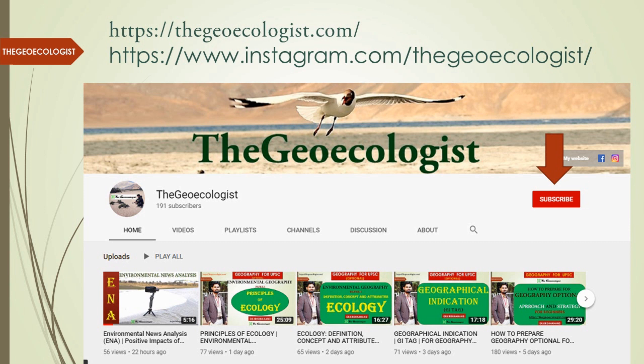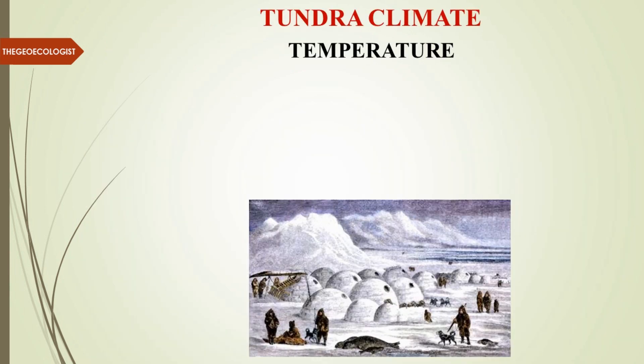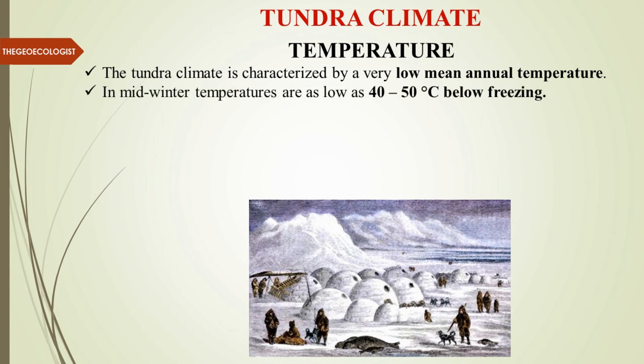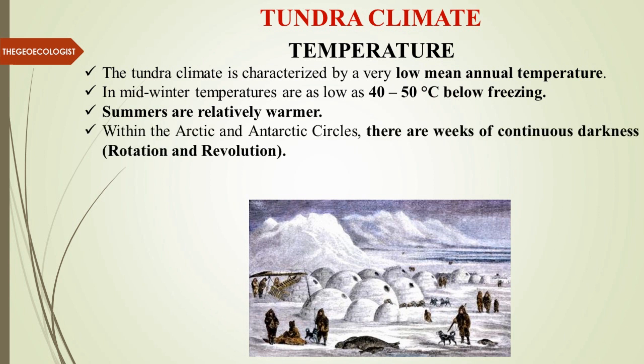The first thing we need to understand is the climatic part of tundra — the temperature distribution. The tundra climate is characterized by very low mean annual temperature. In midwinter, temperatures are as low as minus 40 to 50 degrees Celsius. Summers are relatively warmer but also close to zero — sub-zero — so even summers are very cold.